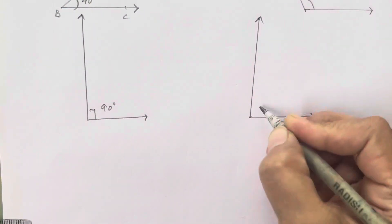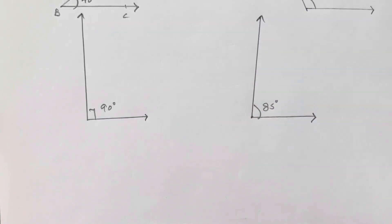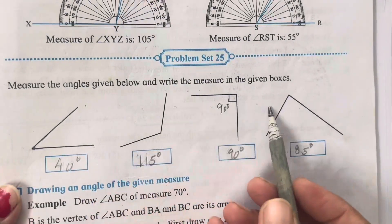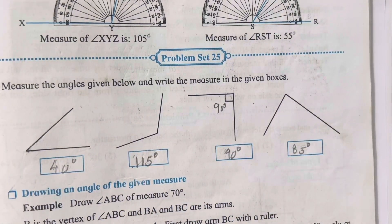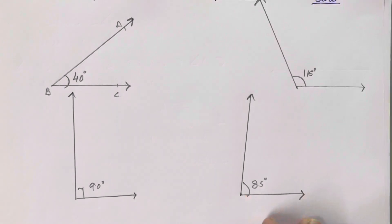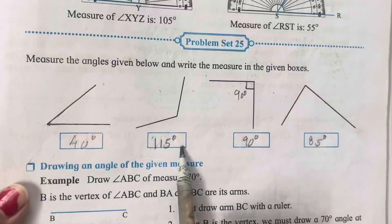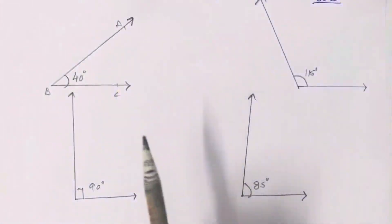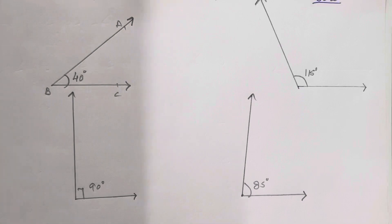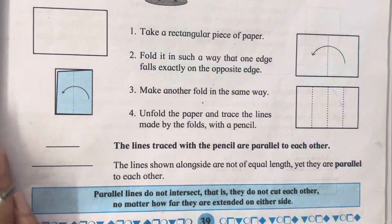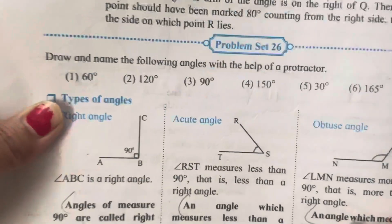All four figures I drew are in a different orientation from those in the textbook, but you should understand that these are drawn according to the measurements we measured. If you want to draw them the way they appear in the textbook, that is also correct. Let's move on to Practice Set 26.